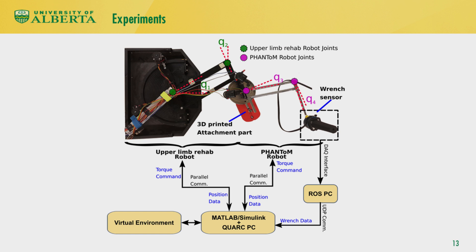Experiments were performed to evaluate the proposed methods using a 4 degree of freedom planar redundant haptic interface. This was created by serially connecting a 2 degree of freedom planar upper limb rehabilitation robot to a 2 degree of freedom phantom robot, with the base joint of the normally 3 degree of freedom phantom robot removed. A coupler was designed and 3D printed to connect the end effector of the rehabilitation robot to the base of the phantom robot. A 6 degree of freedom force-torque sensor was attached to measure end effector forces. Controllers were implemented in MATLAB and Simulink with Quanser real-time control software, and force-torque data was sent over UDP from a ROS computer.